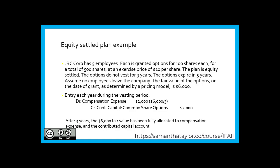The entry during the vesting period is to debit compensation expense for $2,000, which represents the grant date fair value of $6,000 divided by three — the three years of the vesting period. Each year we will debit compensation expense for $2,000 and credit contributed capital for common share options for $2,000. Fast forward three years, and there would be $6,000 worth of fair value fully allocated to compensation expense and accumulated in the contributed capital amount.